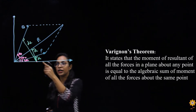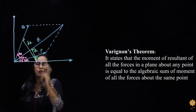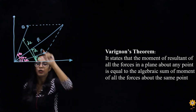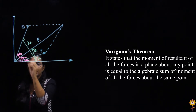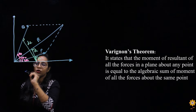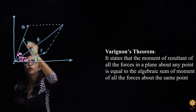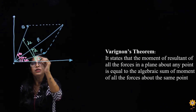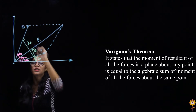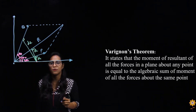Looking at this diagram, let us consider this is one force Q and this is force P, and R is the resultant of P and Q. Here are the angles — this is the angle for force P with the origin point, this is the second angle, and this is the angle for force Q. D1 and D2 are the two perpendicular distances for forces P and Q, and distance D is the perpendicular distance for the resultant force R.